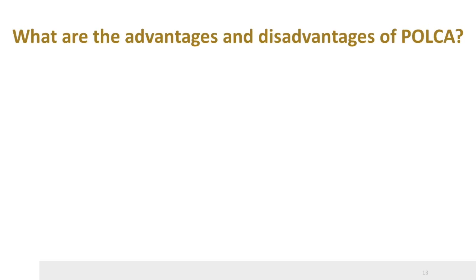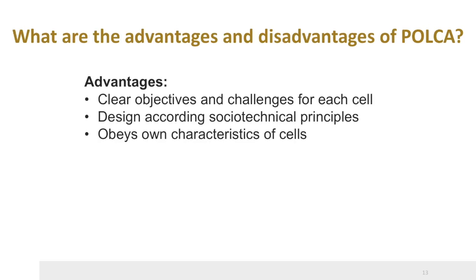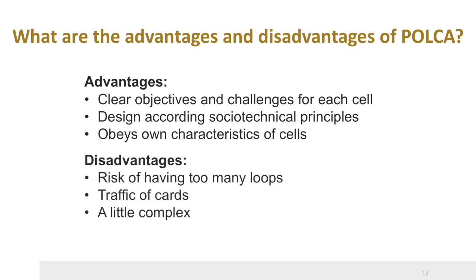What are the advantages and disadvantages of POLCA? First, POLCA gives clear objectives for each cell — the cell is made responsible for realizing lead times and due dates. Furthermore, the team has clear variables for further improvement. Second, socio-technical principles are obeyed in the design of the cells. They are as autonomous as possible and do have the means to cope with variances. Although the interfaces between cells are identical, the scheduling of jobs within each cell may be different. Some cells may function as a lean flow line; other cells may use a Gantt chart or other methods.